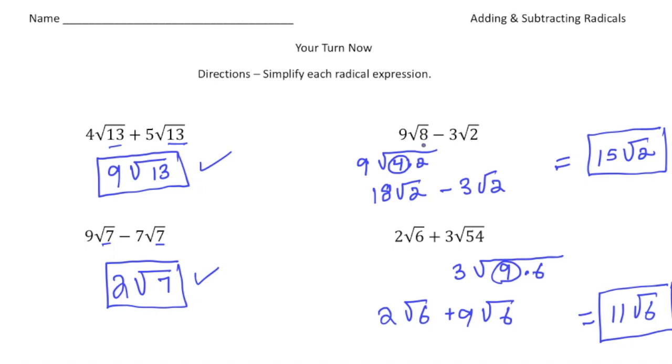These two were a little more complex because what was inside the original radical sign was different. So I had to simplify these to get the same values. I was able to rename 9 radical 8 as 18 radical 2. And because that now has the same as this, 18 radical 2 take away 3 radical 2 gives you 15 radical 2. Same thing down here. I had to rename 3 radical 54 as 9 radical 6. So 9 radical 6 plus 2 radical 6 gives you 11 radical 6. How did you do?